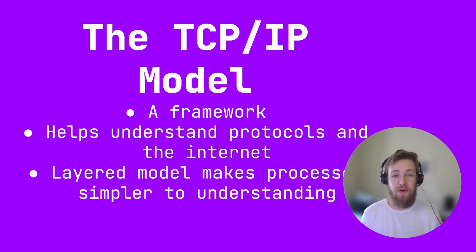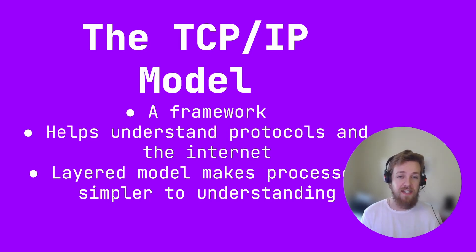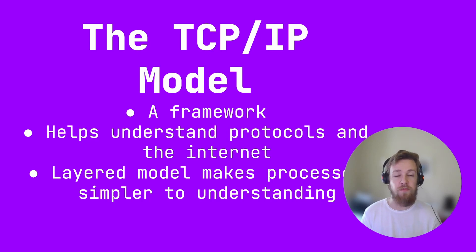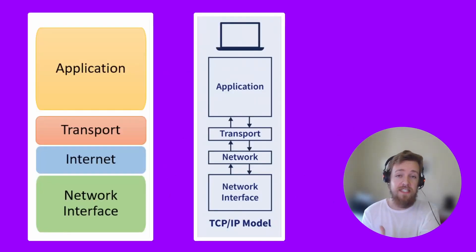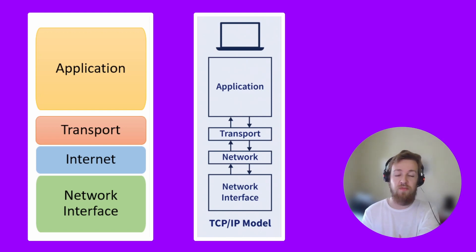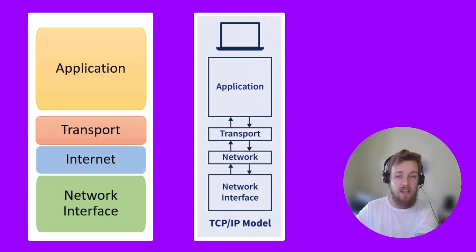The TCP/IP model is a framework and it divides the process of sending and receiving data into four layers, which can help people understand each protocol and how they interact with each other. This is what the TCP/IP model looks like — if you Google this you'll probably find images similar to this. It's also called the TCP/IP stack, but they're the same thing.